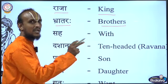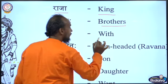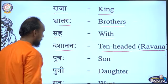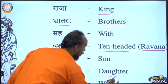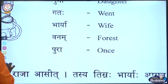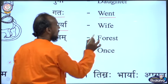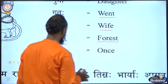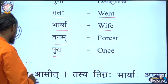Brata Raha means Brothers. Saha means With. Dasha Nanaha means Ten-headed Ravana. Putraha means Son, Putri means Daughter. Gata Raha means Went. Bharya means Wife. Vanam means Forest. Pura means Once.